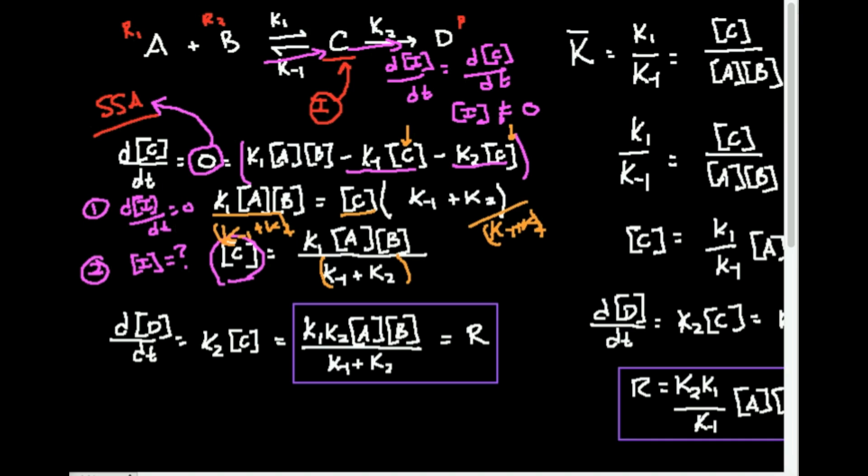Why did we solve for [C]? Because intermediates — going back to a general chemistry concept — are so short-lived that you really can't measure their concentration. You can measure A and B, and you can determine rate constants. So the reason we determine an expression for C is that we're going to substitute this expression in for C in another expression.